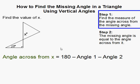So the first thing we need to do is find the measure of the angle across from the missing angle. Here's our missing angle or unknown angle and we've got to find this guy, because as you recall that vertical angles are equal. So once we find this, we can find this.